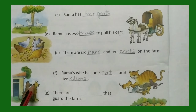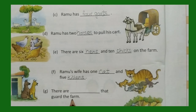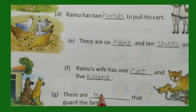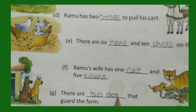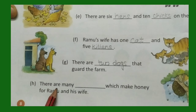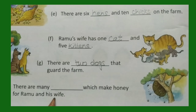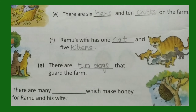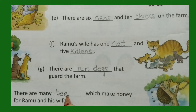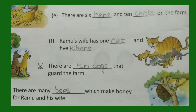For g, there are dash that guard the farm. What animal can you see here? Dog. Is it one or two? There are two dogs. For h, there are many dash which make honey for Ramu and his wife. Many — more than one, so the plural is bees.